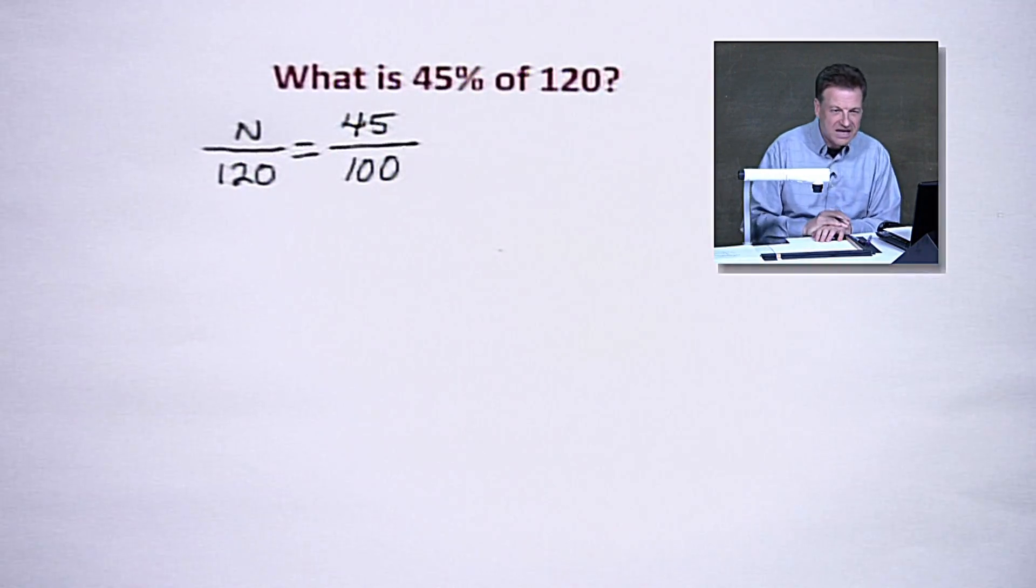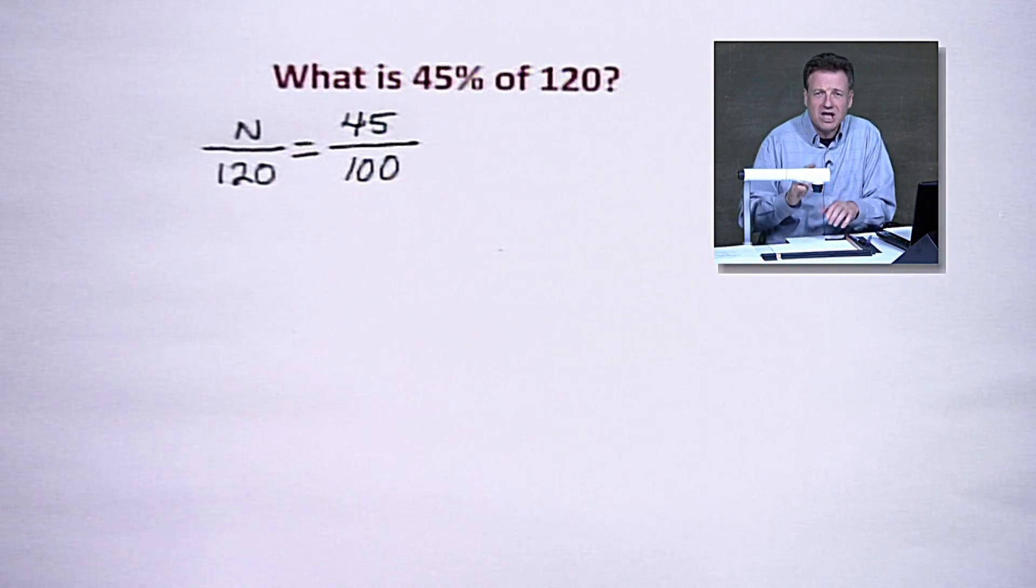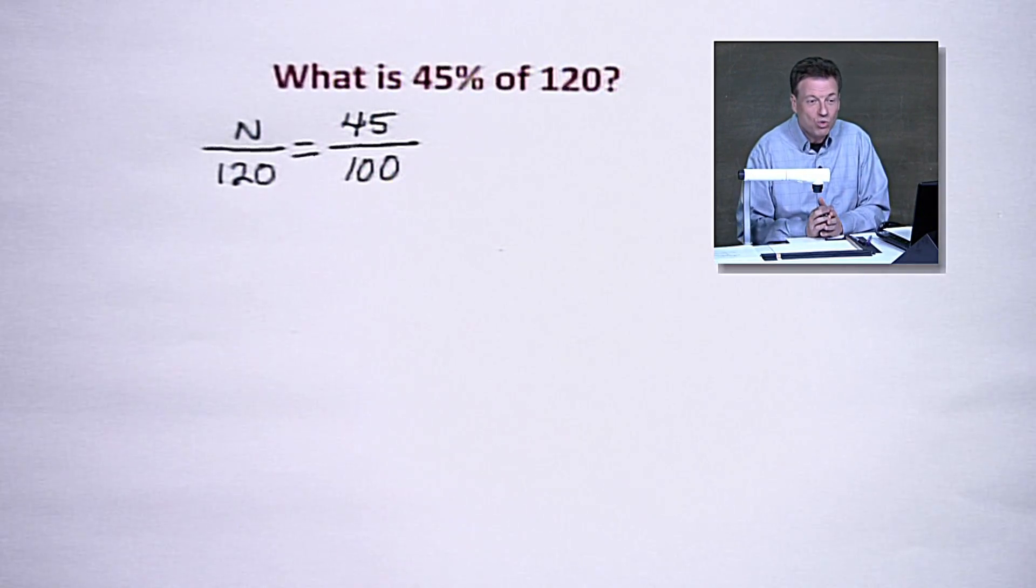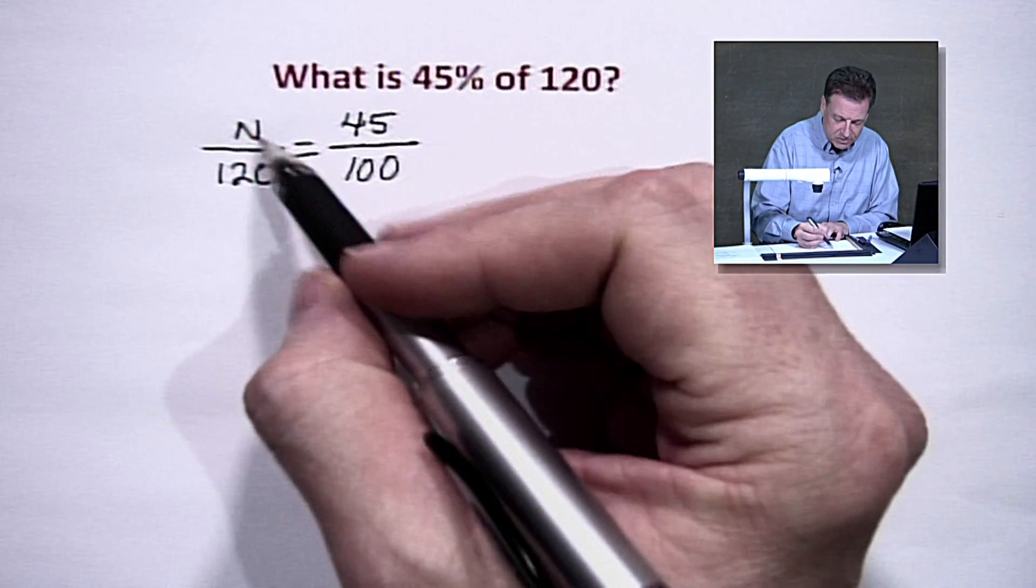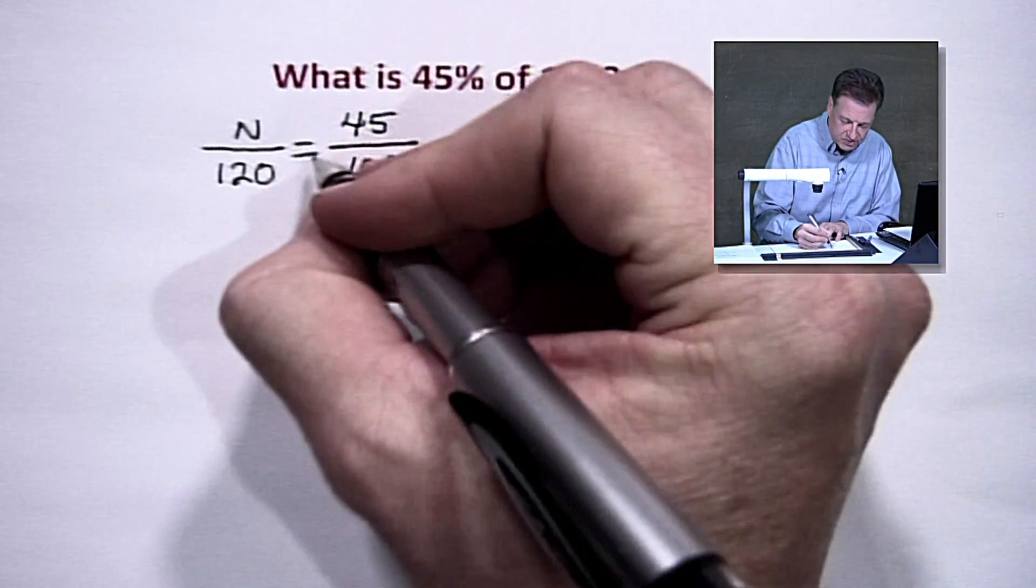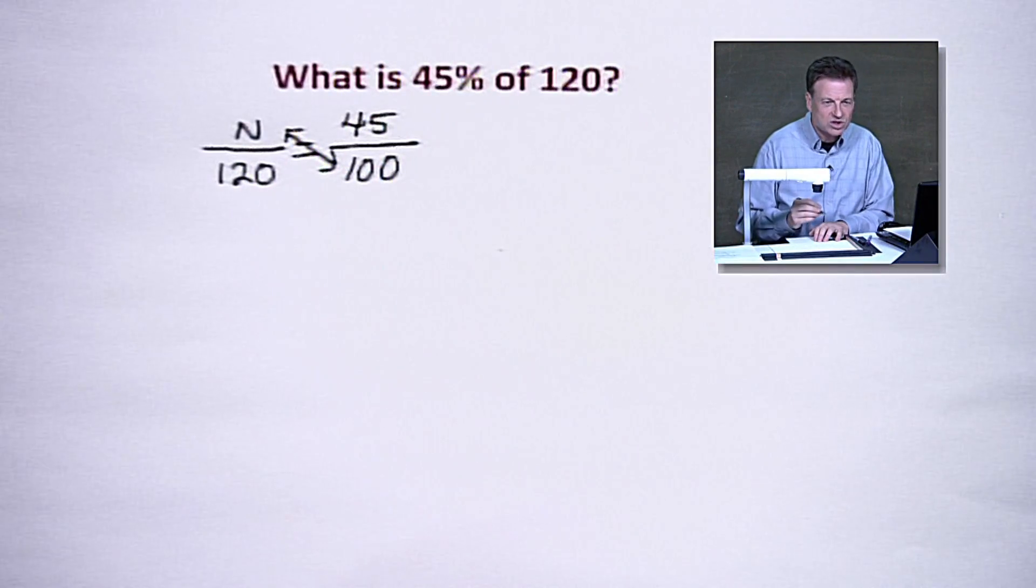I don't know what it is. I'll call it N up there. Some of you might want to call it X. Some of you might want to call it A. It's a variable. We don't know what it's representing. But what we're going to do is we're going to allow it to be the part here, and we're going to cross-multiply. This is good old proportion land, ratio and proportion here.